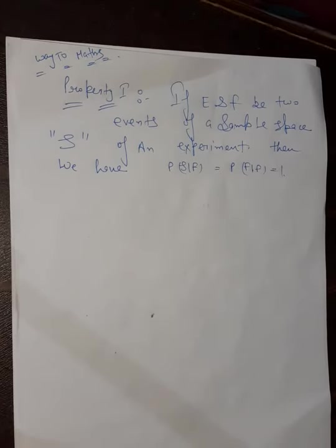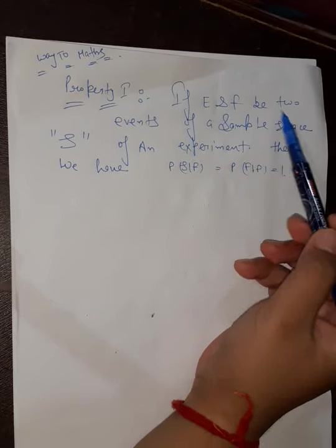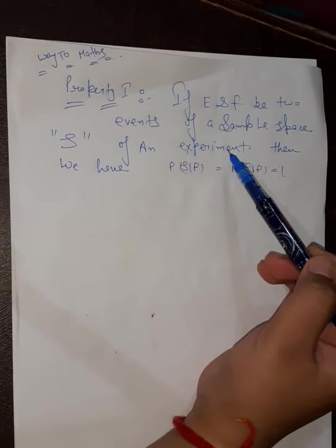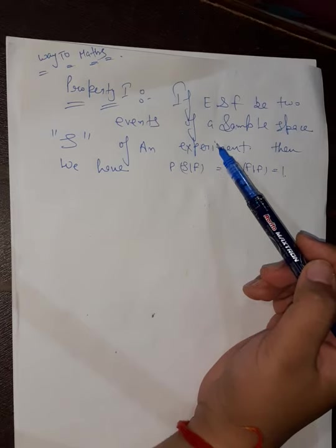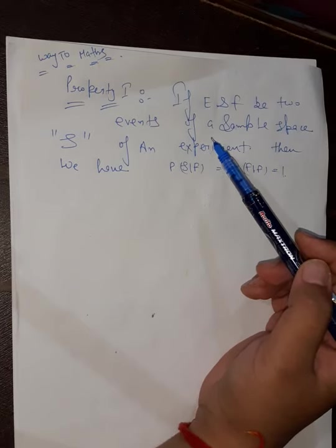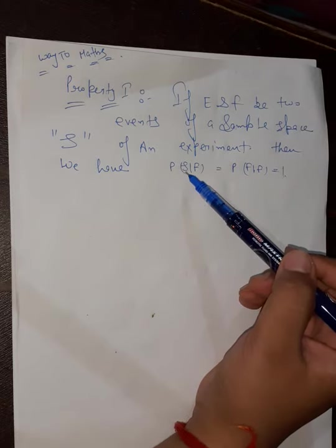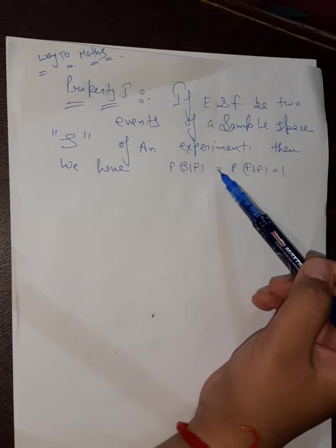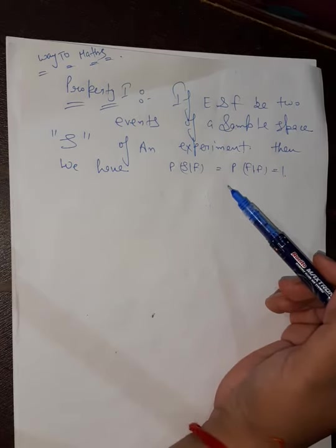Now let us look at the properties of conditional probability. Statement of Property 1: If E and F are two events of a sample space S of an experiment, then the probability of S given F is equal to the probability of F given F, which equals 1.